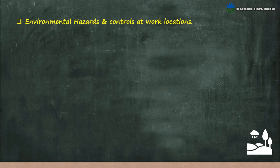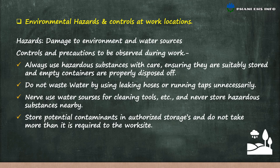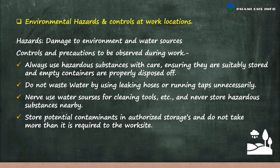Environmental hazards and controls at work locations. Hazards include damage to the environment and water sources. Controls: always use hazardous substances with care, ensuring they are suitably stored and empty containers are properly disposed of; do not waste water by using leaking hoses or running taps unnecessarily; never use water sources for cleaning tools; never store hazardous substances nearby; and store potential contaminants separately and do not take more than is required to the work site.